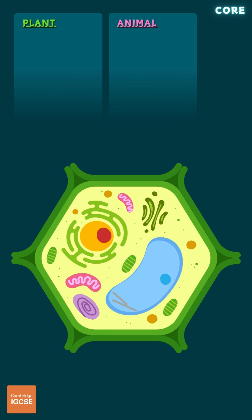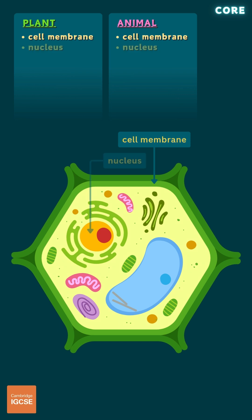Both plant and animal cells have a cell membrane that encloses the cytoplasm and regulates the movement of substances into and out of the cell, a nucleus which contains the cell's genetic material, its DNA, and controls cell activities, and a cytoplasm, a jelly-like substance that fills the cell and contains the other organelles.